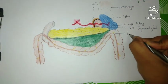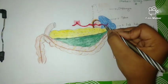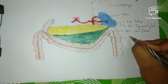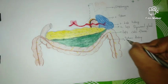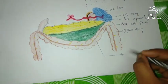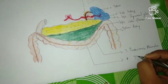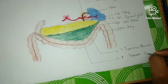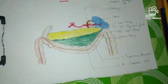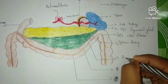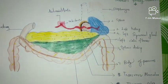This is the left colic flexure. We also have the splenic artery and the transverse mesocolon. The last structures are the transverse colon and the body of the pancreas. So these are the structures that form the bed of the stomach.